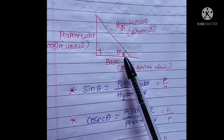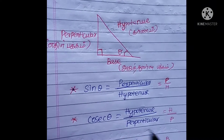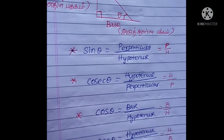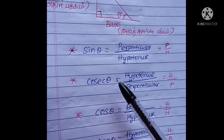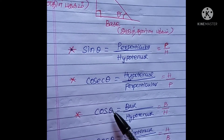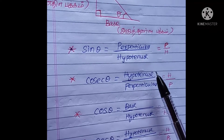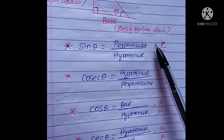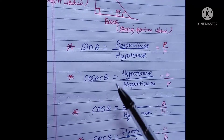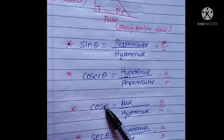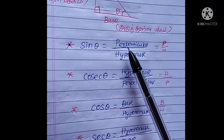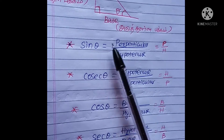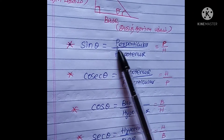That is hypotenuse, perpendicular, and base. We will ask some questions about sin theta, cos theta, and tan theta. If you need the value of sin theta and cos theta, then sin theta is equal to 2 by 3.